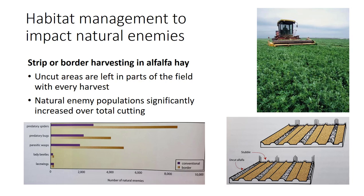Environmental factors such as weather can adversely affect natural enemy populations. Although not much can be done to diminish the ill effects of weather, the microclimates of natural enemy populations can be made more favorable through manipulation of irrigation, use of cover crops, modification of pruning techniques, or by changes in harvesting practices. For example, border harvesting, where a strip of alfalfa is left standing after each harvest, benefits hay production by maintaining populations of predators and parasites of alfalfa pests in the alfalfa field.